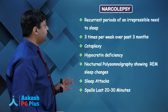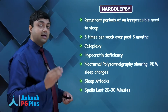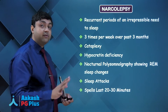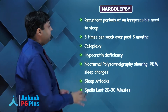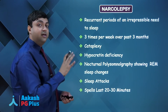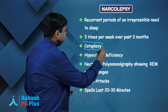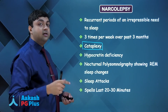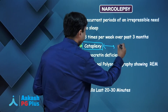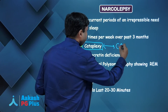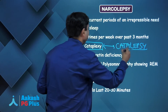Narcolepsy is a peculiar disorder in which there are recurrent periods of irrepressible urge to sleep — whenever a person gets this urge, they fall asleep whatever they are doing. The criteria require these episodes at least three times a week for the last three months. There is a phenomenon called cataplexy — sudden loss of all muscle tone — which is to be differentiated from catalepsy, an unrelated catatonic symptom.